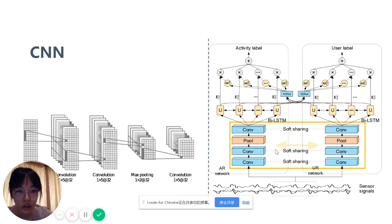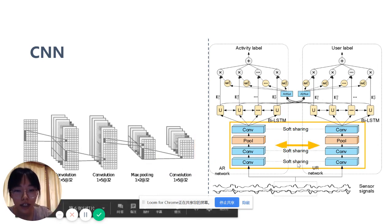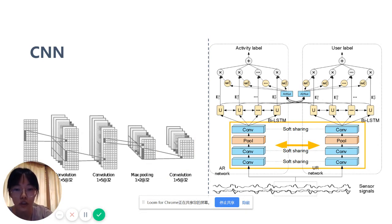Note that we use a tensor decomposition-based strategy to softly share parameters between the convolutional layers of activity and user recognition networks, so that commonalities and differences across tasks are exploited.